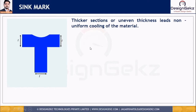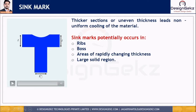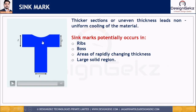Sink marks potentially occur in areas like ribs, bosses, and areas of rapidly changing thickness or large solid regions. If you design the ribs with the same thickness as the wall thickness, the local thickness at the base area will increase during solidification, leading to the sink mark because the material begins to cool and harden unevenly. Not all areas will solidify at the same rate, and the temperature gradient in the molten region still exists at the center, leading to the sink mark defect. The surface gets locally depressed, which we call the sink mark.